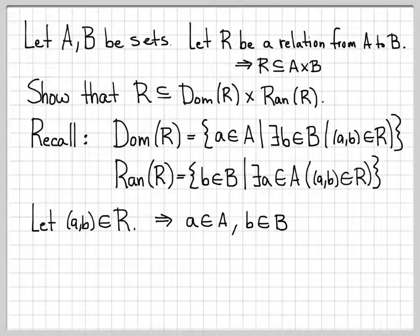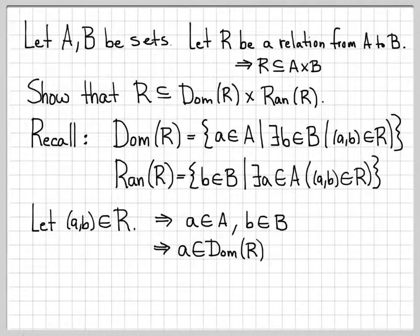Now, knowing that we have (a, b) in R, with a in A and b in B, we can conclude very easily just by looking at the definition of the domain that a has to be in the domain of R. That's obvious because we know there exists a b in B, and we also have (a, b) in R. So the right-hand part of the definition of domain of R — such that there exists a b in B with (a, b) in R — is all satisfied. We have a b in B, we have (a, b) in R, and a is in A, so a is in the domain of R.